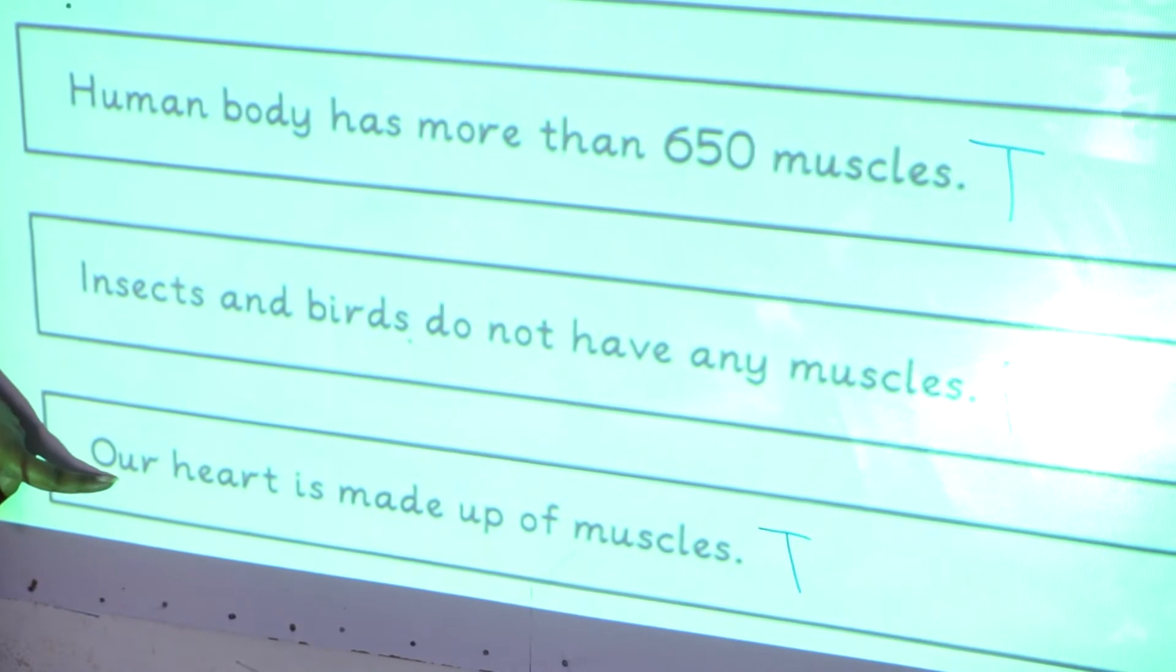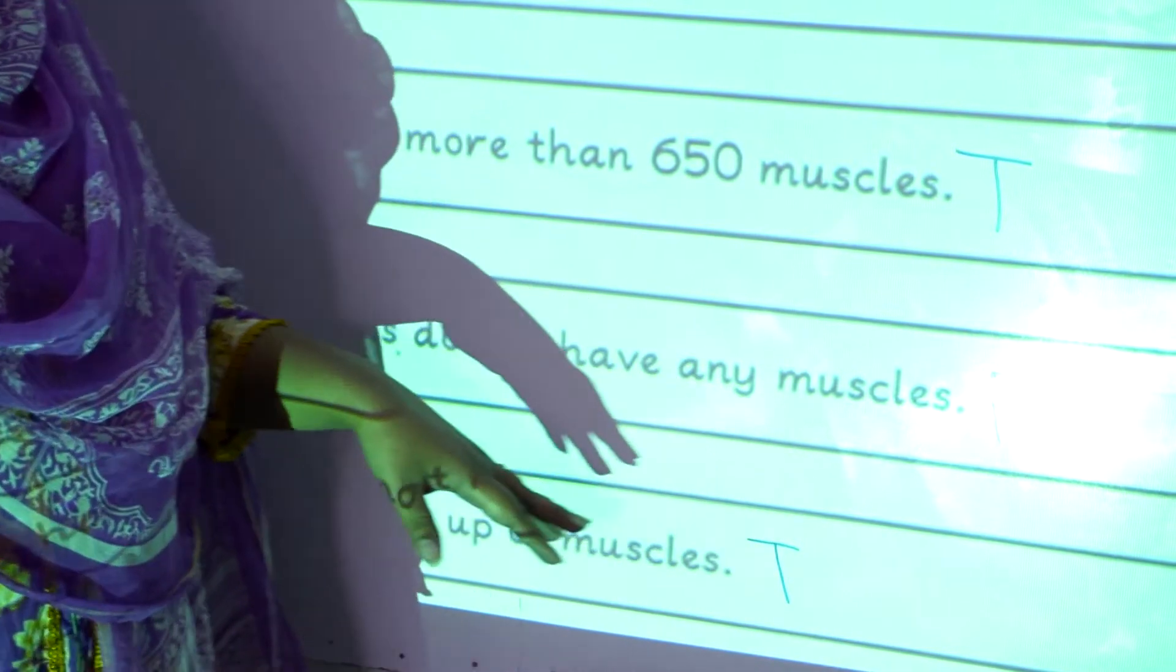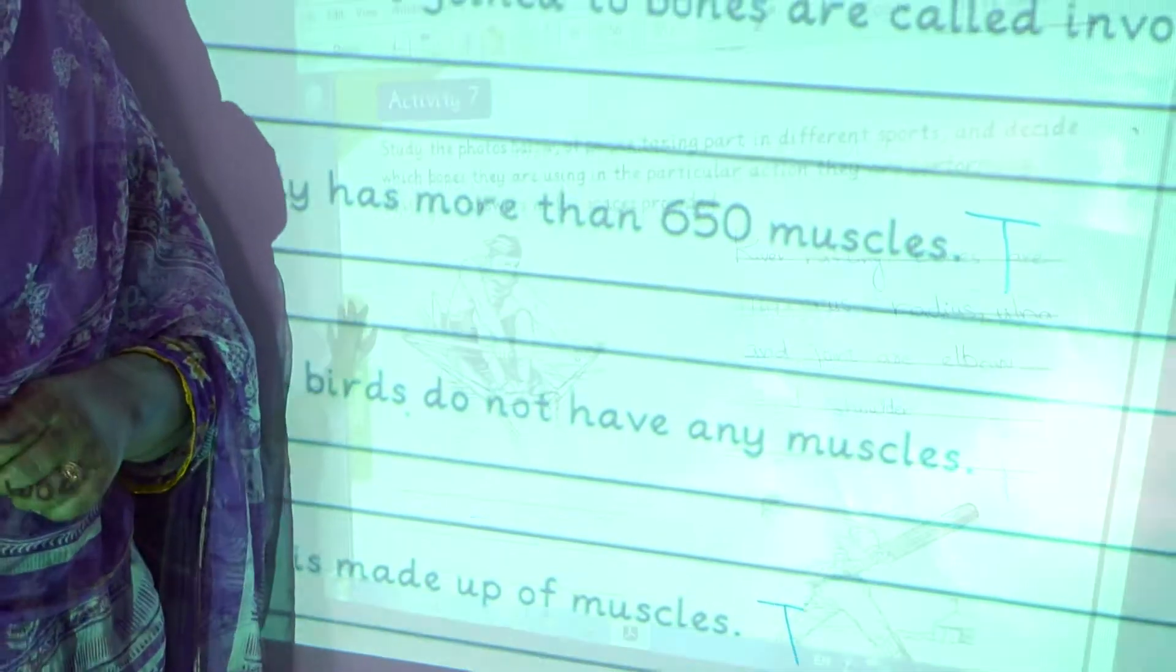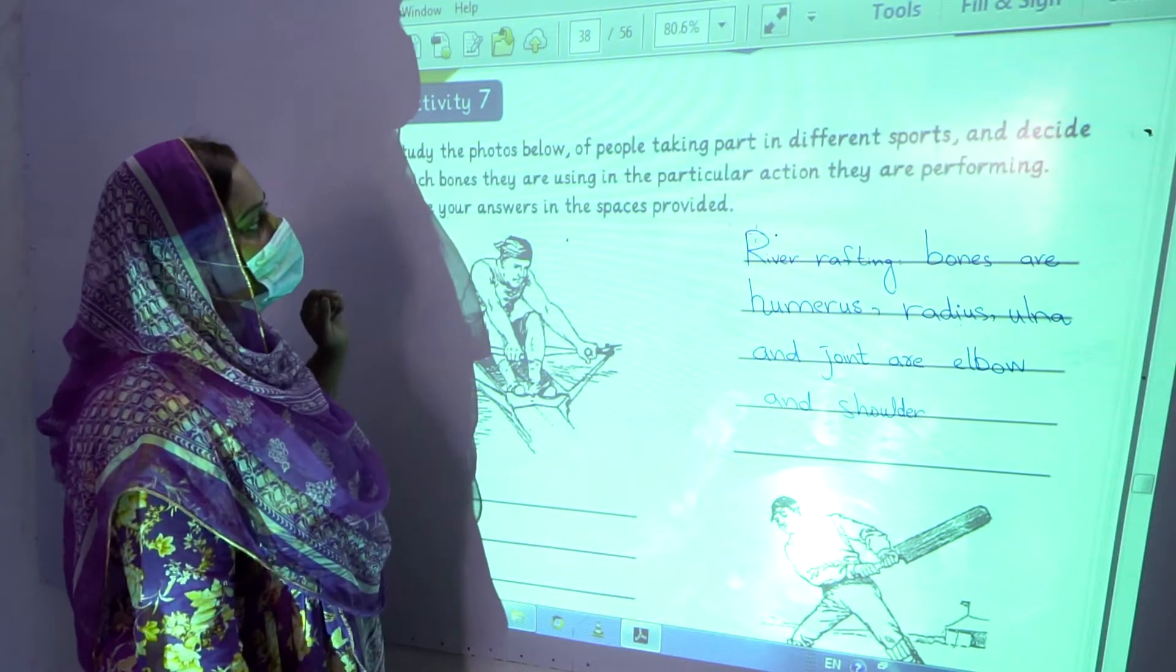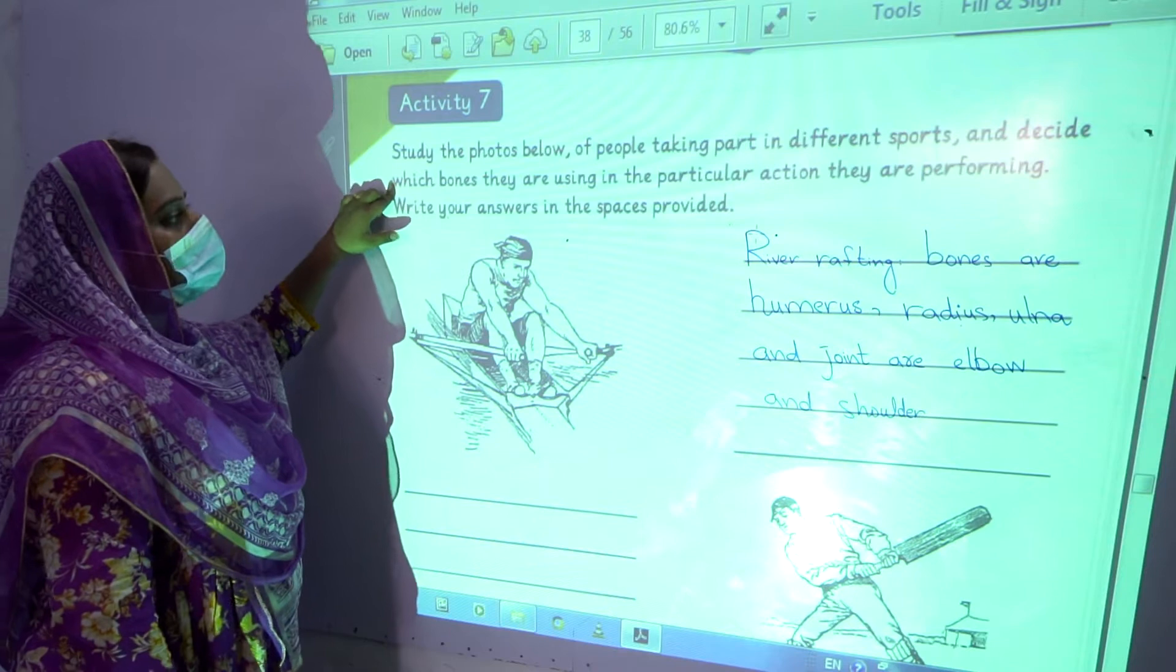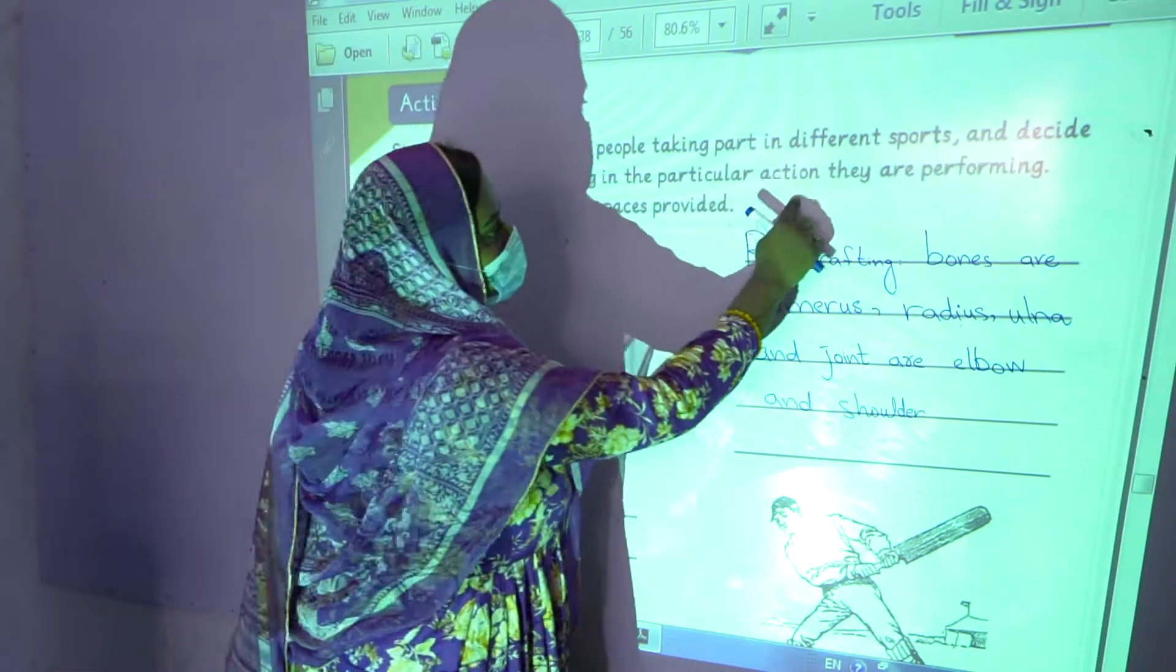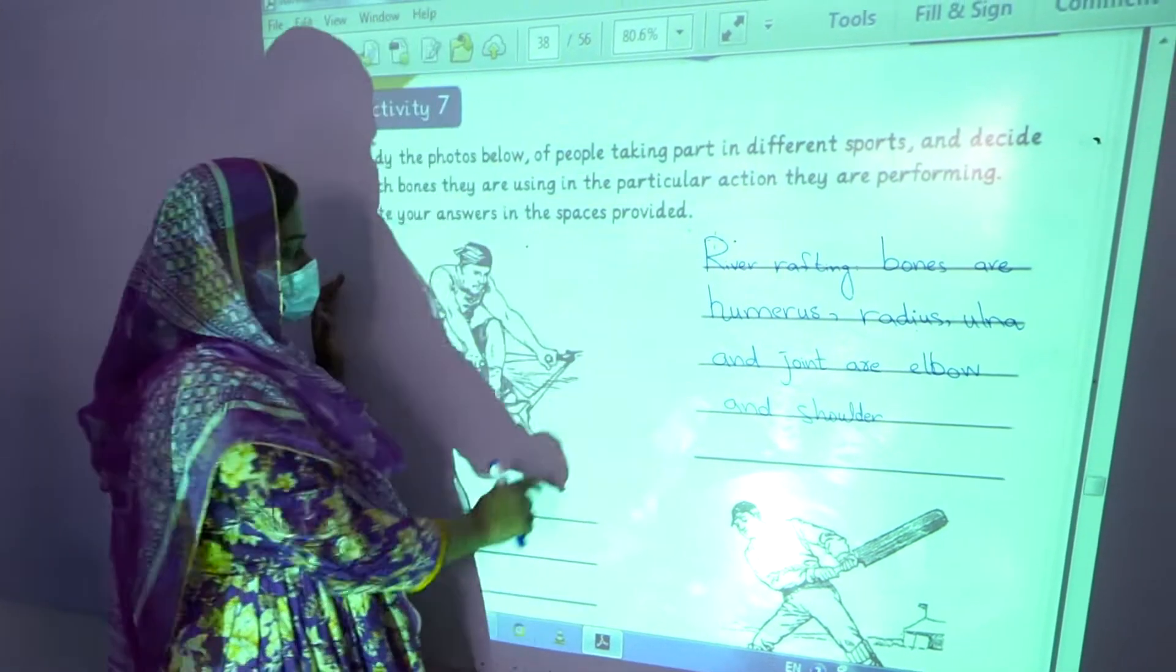Our heart is made up of muscles. Yes, that statement is true because our heart is made up of different types of muscles. This is our activity number 7. Study the photos below of people taking part in different sports and decide which bone they are using in the particular action they are performing. Write your answer in the space provided.